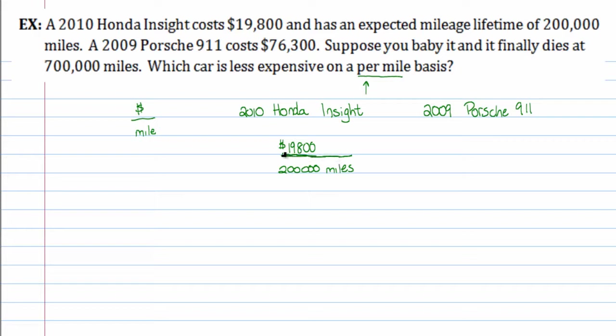So that's basically you're just saying I'm spending about $20,000 for every 200,000 miles. For the Porsche, you're spending $76,300 for every 700,000 miles. Now we're going to compare these two quantities, and these are called ratios, by the way. This is a ratio of the cost to the mileage for the Porsche, and this is a ratio of the cost to the mileage for the Honda Insight.